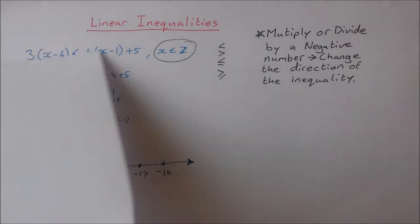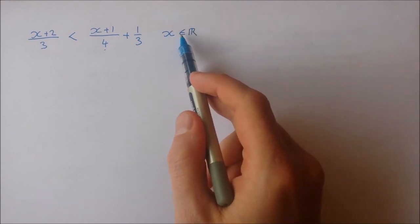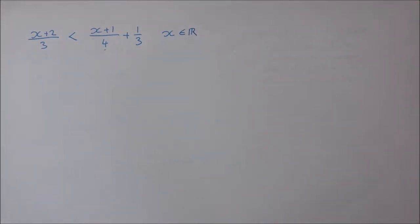Okay, let's take a look at another example. This time it's x plus 2 over 3 is less than x plus 1 over 4 plus a third and x is an element of the real numbers. And this will affect how we graph the number on the number line at the end.